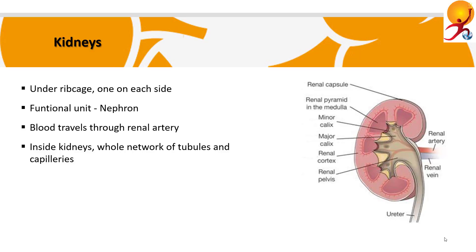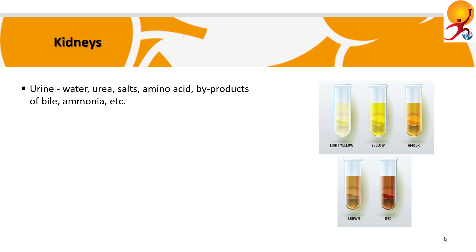Filtered blood leaves the kidney through the renal vein and flows back to the heart. The continuous blood supply entering and leaving the kidneys gives the kidneys their dark red color. Urine is a concentrated solution of waste material containing water, urea which is a waste product that forms when proteins are broken down, salts, amino acids, byproducts created during the production of bile in the liver, ammonia, and any substance that cannot be reabsorbed into the blood.